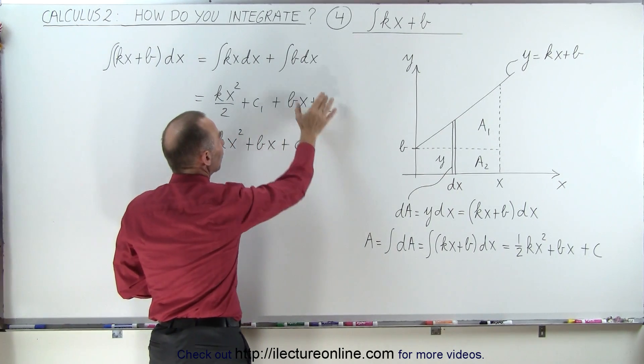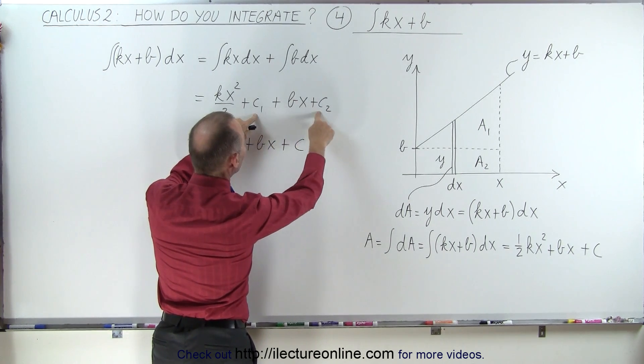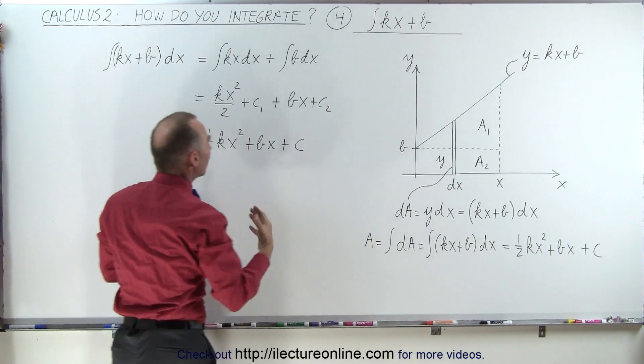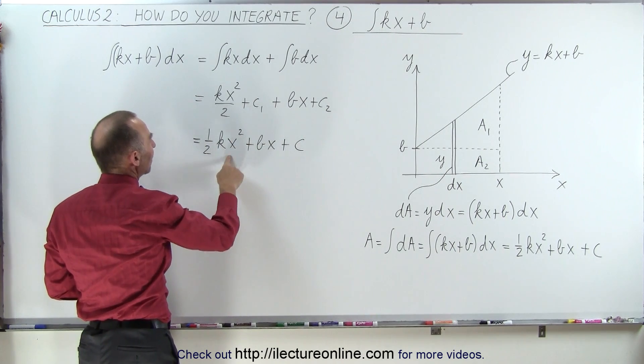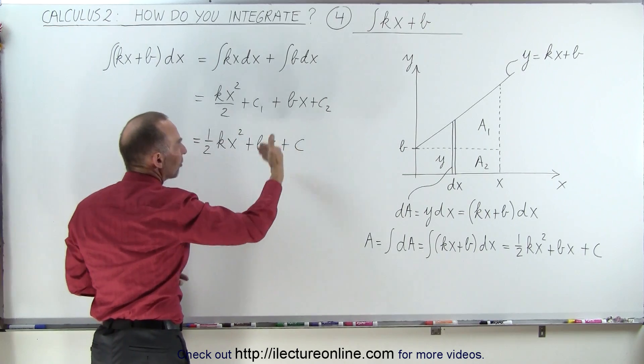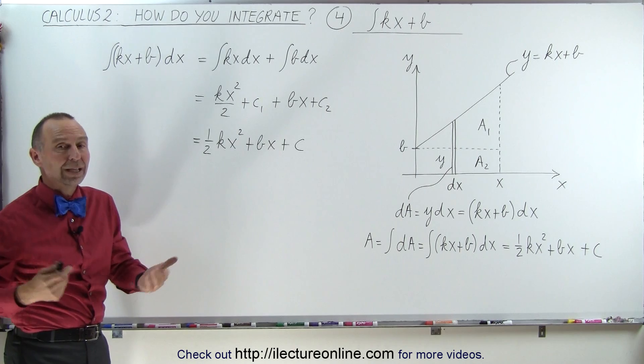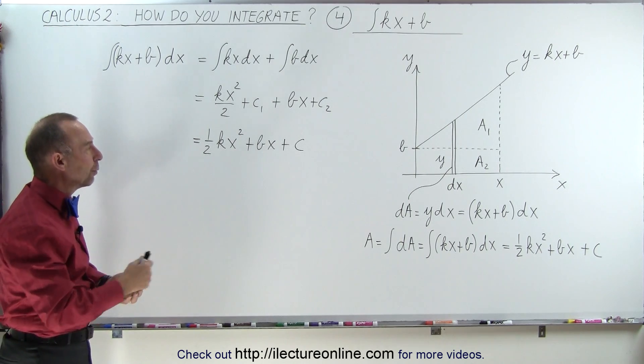When we add these two together, c1 plus c2, we can just call that a constant. So the integral will be one-half kx squared for the first integral, plus bx for the second integral, plus a general constant of integration that we must have since we don't know if we had a constant there or not when we first started.